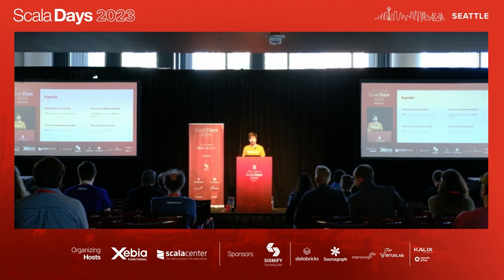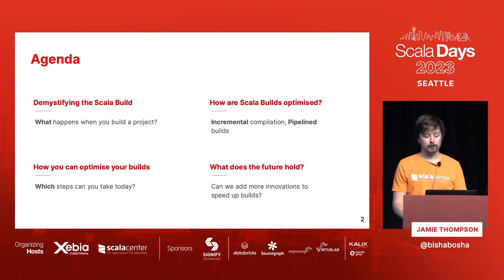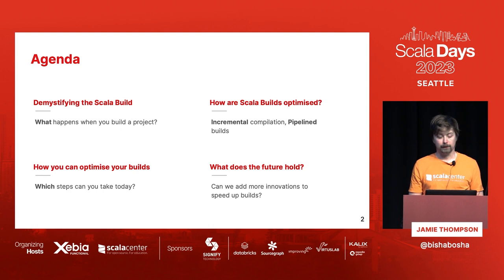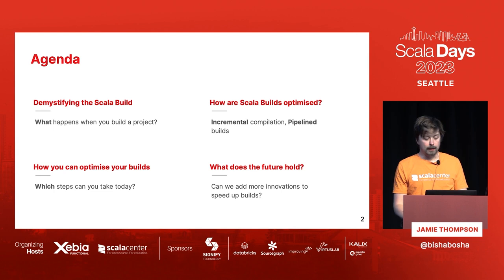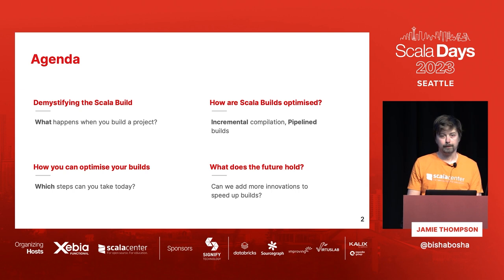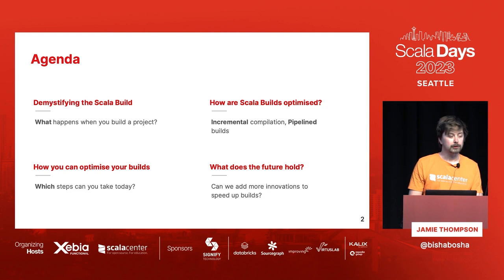I want to demystify how Scala builds work — when you tell your Scala command or SBT or whatever to compile, what is actually going on underneath. Then I want to explore how we actually optimize these builds to make them faster than just running the plain compiler on its own. There are also ways to optimize your build so it benefits from speed performance increases that build tools can provide, and I want to explore the solution space for making it even faster in the future.